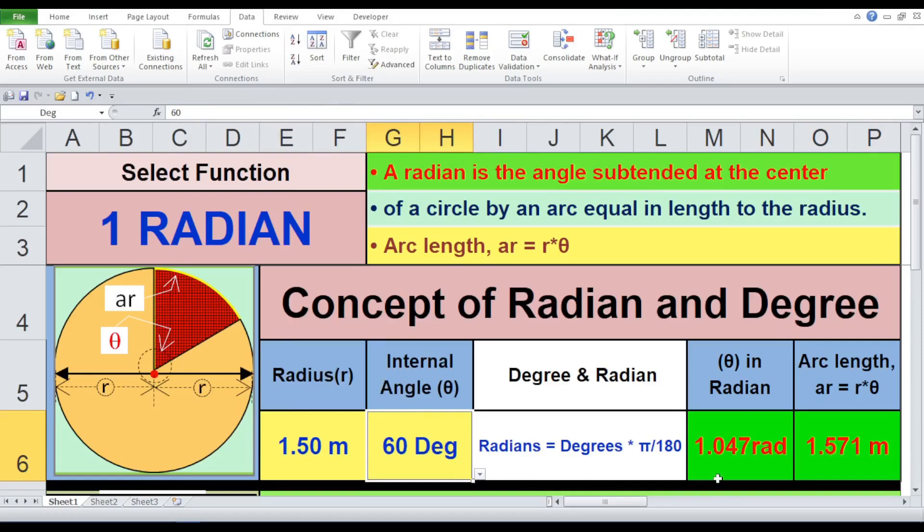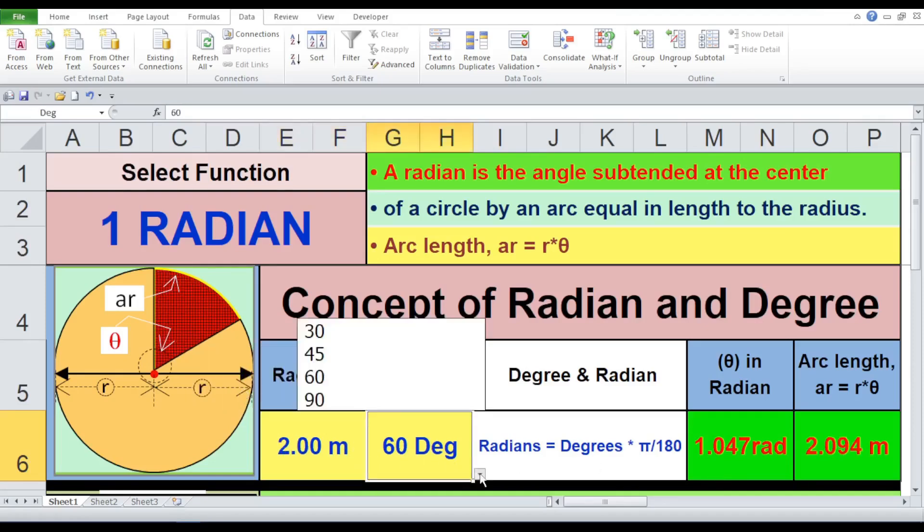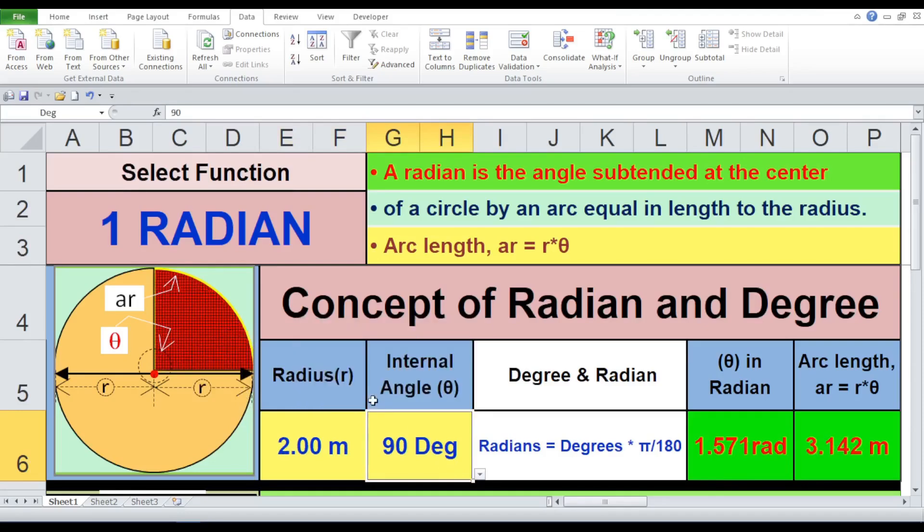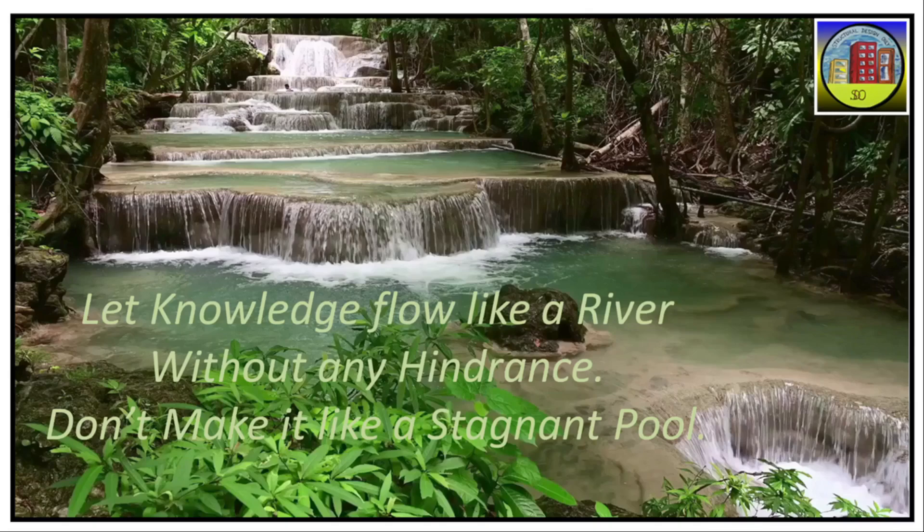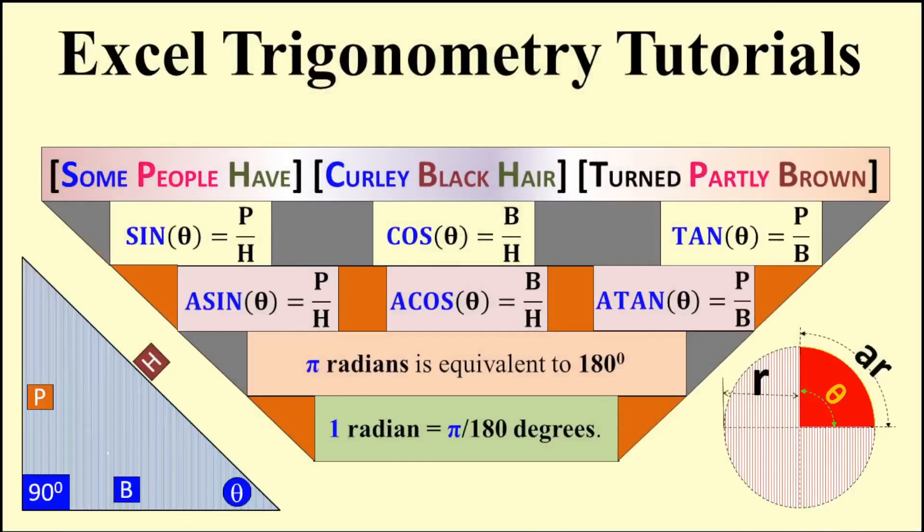Trial 4. Radius 2 meters, angle 90 degrees. And finally, theta equals 1.571 radians, arc length equals 3.142 meters. Let knowledge flow like a river, without any hindrance. Don't make it like a stagnant pool. Hey Excel enthusiasts, I am P.S. Chatterjee and welcome back to my channel.